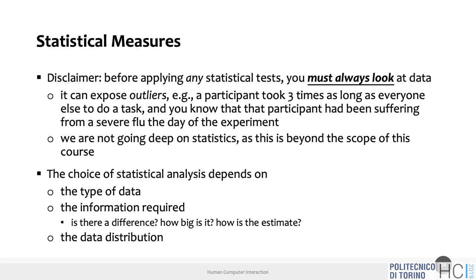The choice of statistical analysis depends on three types of information: the type of data, the information required — what you want to understand from the data, which should emerge from your null or alternative hypothesis — and the data distribution. If you plot the data, is it a normal distribution? Or a t-student distribution? These factors determine which test to apply.